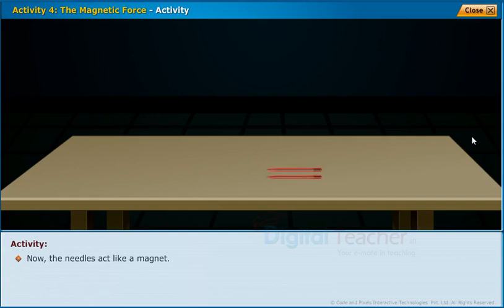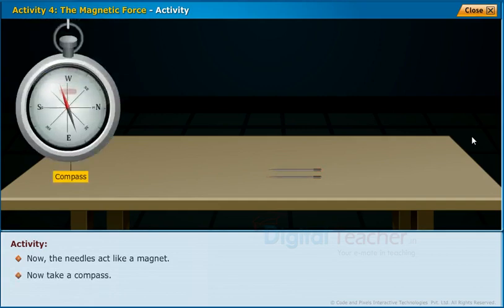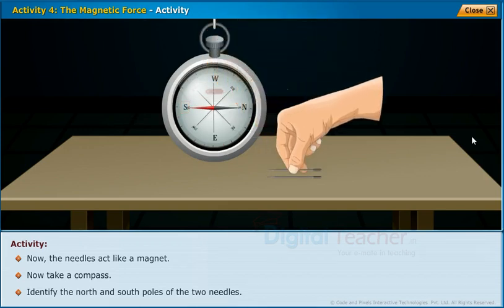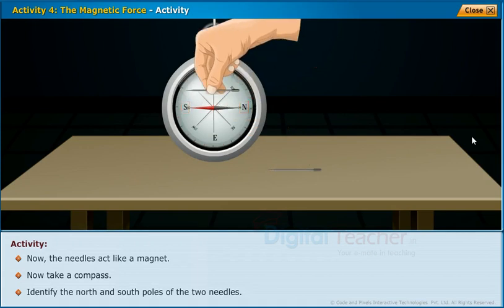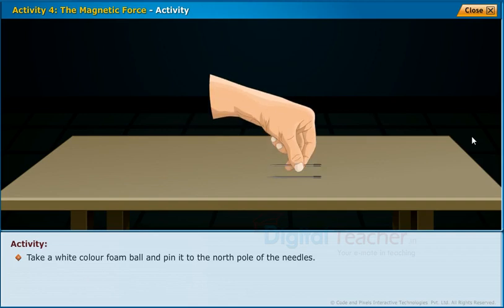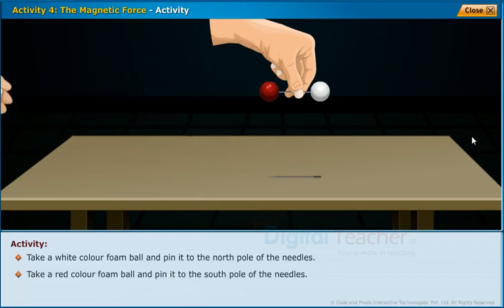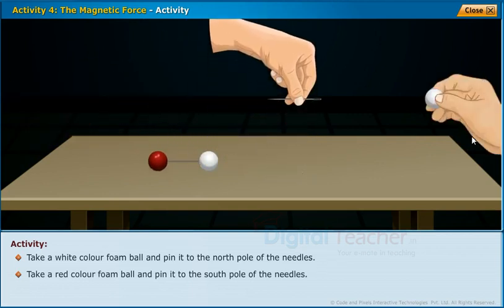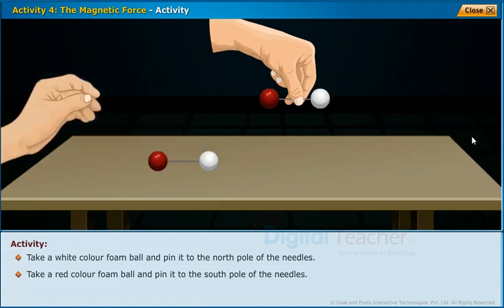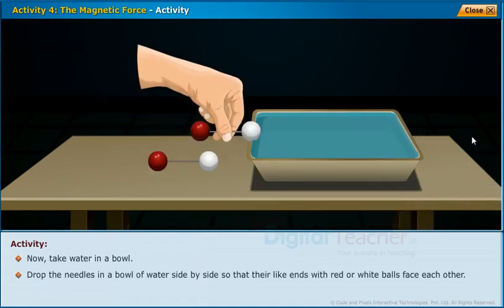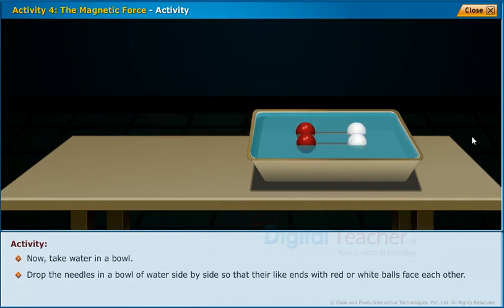Now the needles act like a magnet. Take a compass and identify the north and south poles of the two needles. Take a white color foam ball and pin it to the north pole of the needles. Take a red color foam ball and pin it to the south pole of the needles. Now take water in a bowl. Drop the needles in a bowl of water side by side so that their like ends — with red or white balls — face each other. Observe the changes.